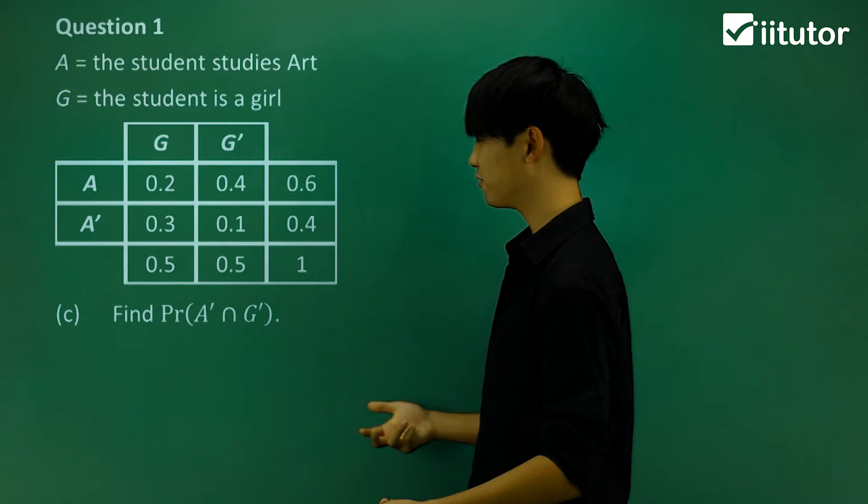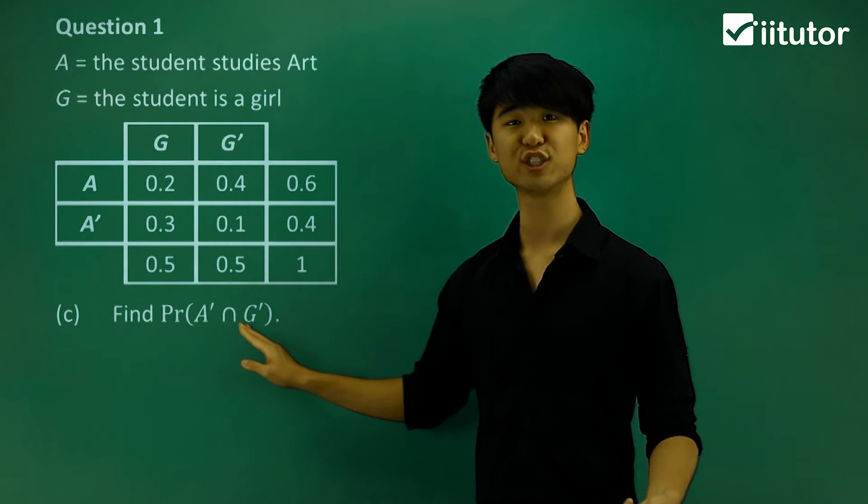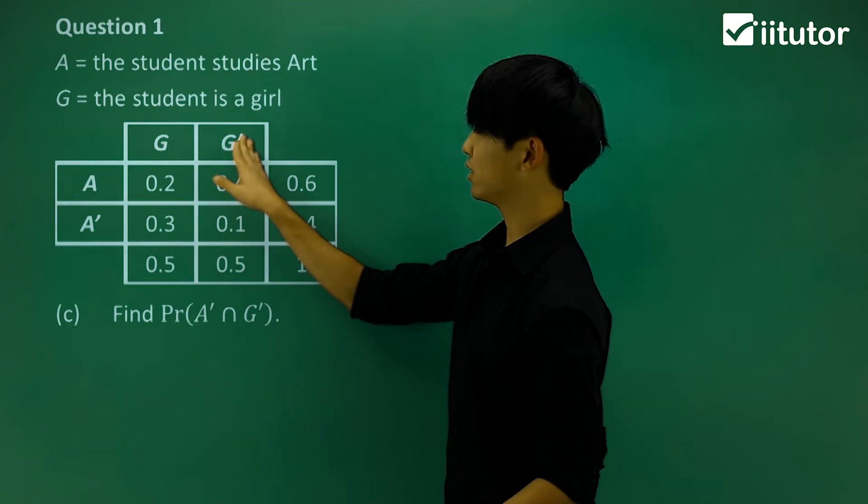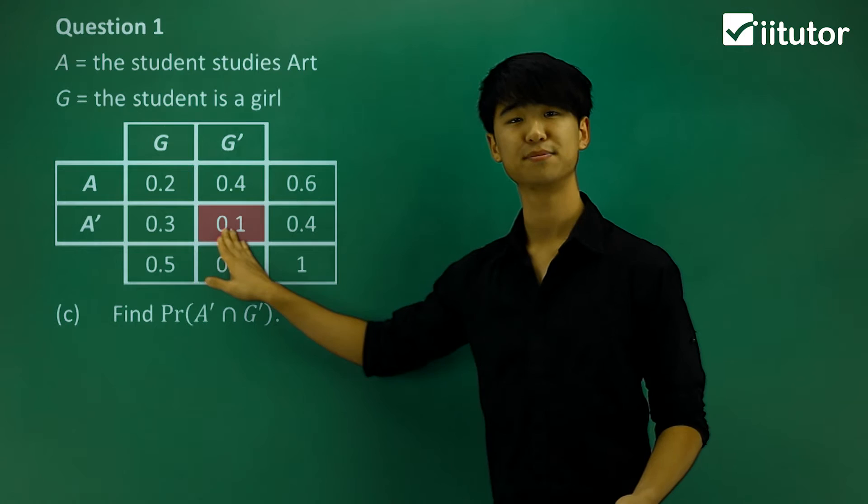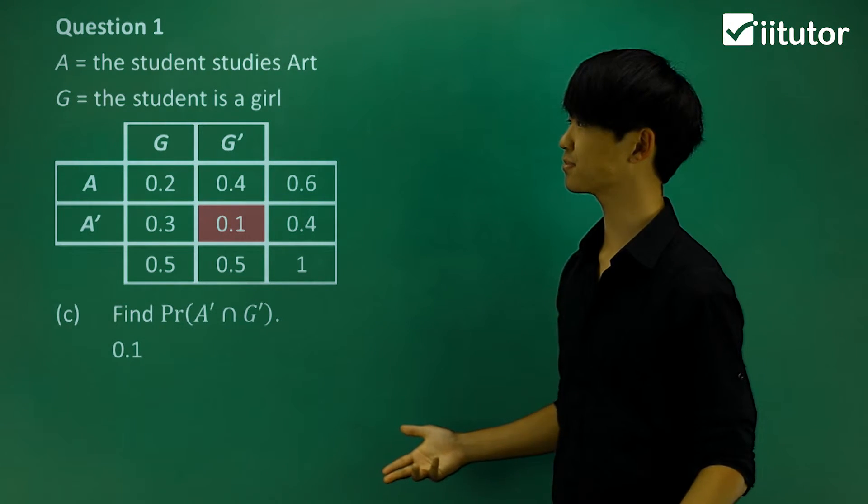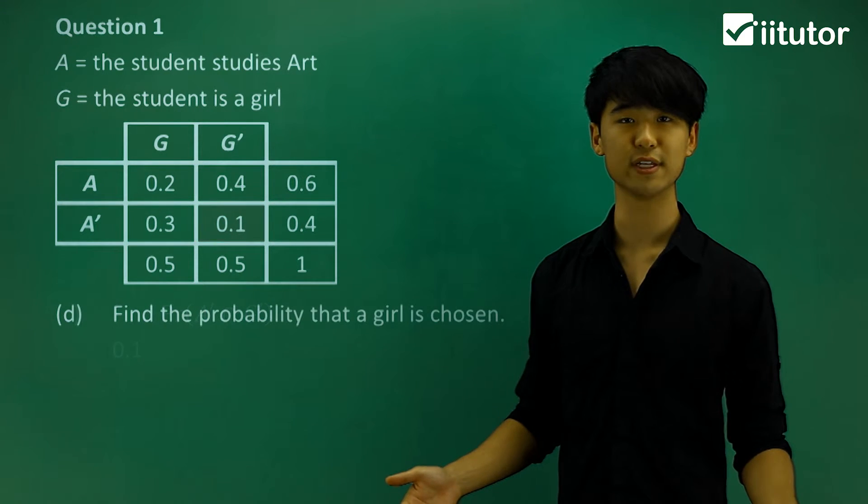What about part C? We're going to try to find the probability of A' and G' occurring. In other words, this one and this one occurring. Well that's this box here. So the answer is the probability of 0.1. Not too difficult reading off the table.